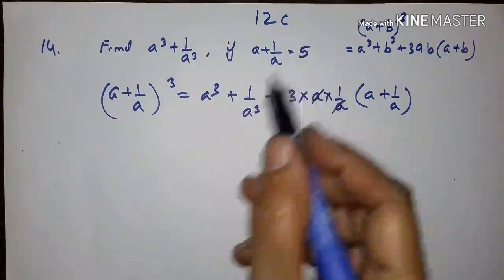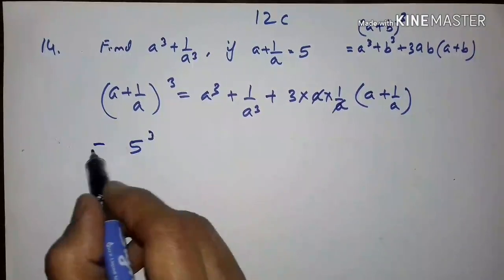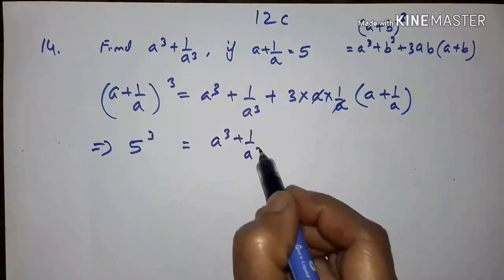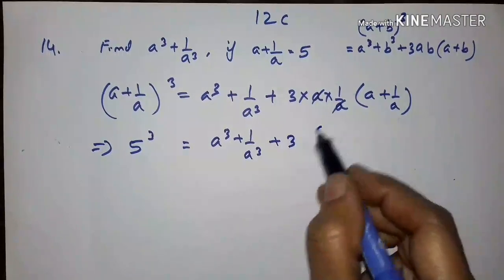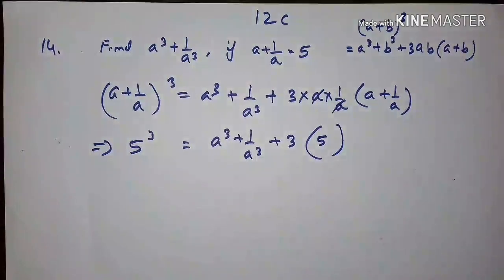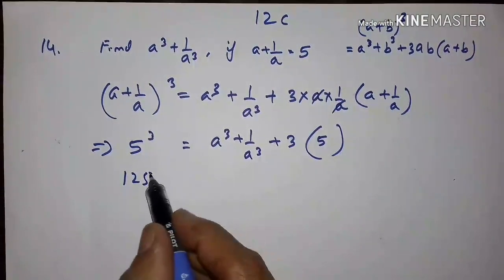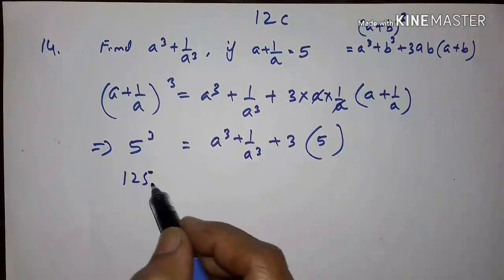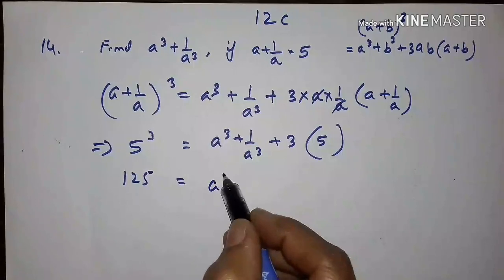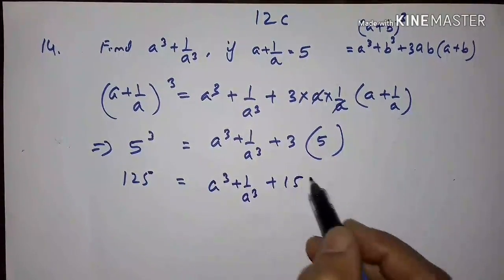Since a plus 1 upon a equals 5, we have 5 cubed equals a cubed plus 1 upon a cubed plus 3 into (a plus 1 upon a), which is 5. So 125 equals a cubed plus 1 upon a cubed plus 15.